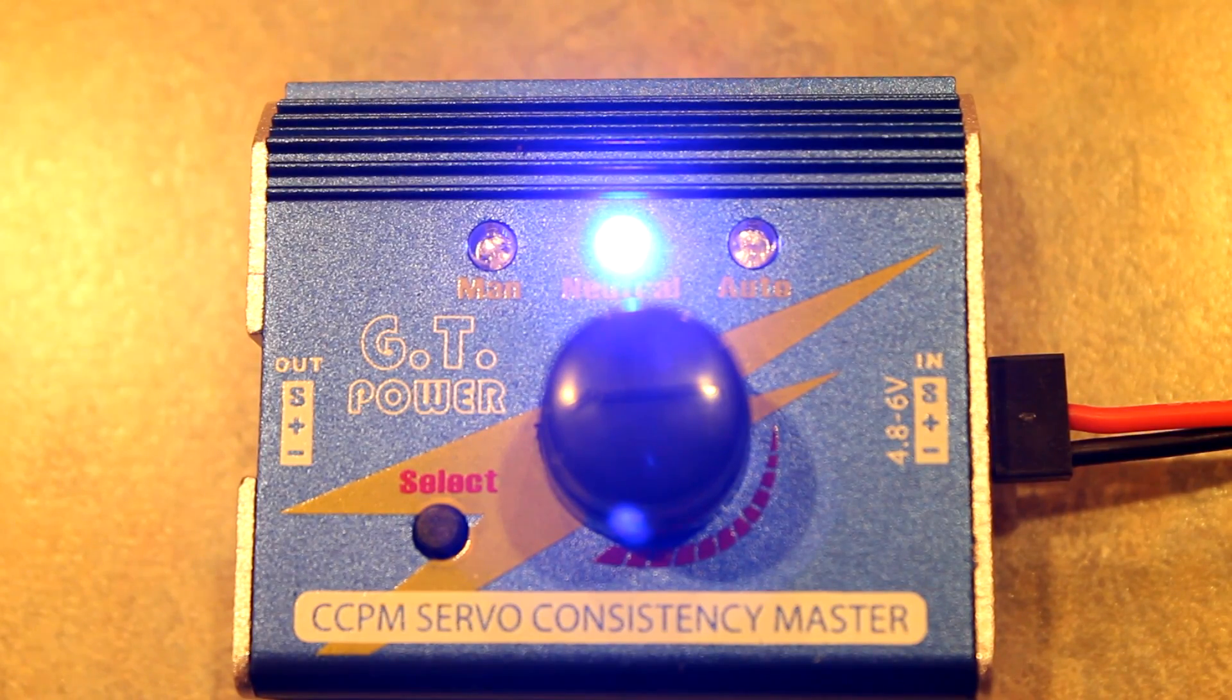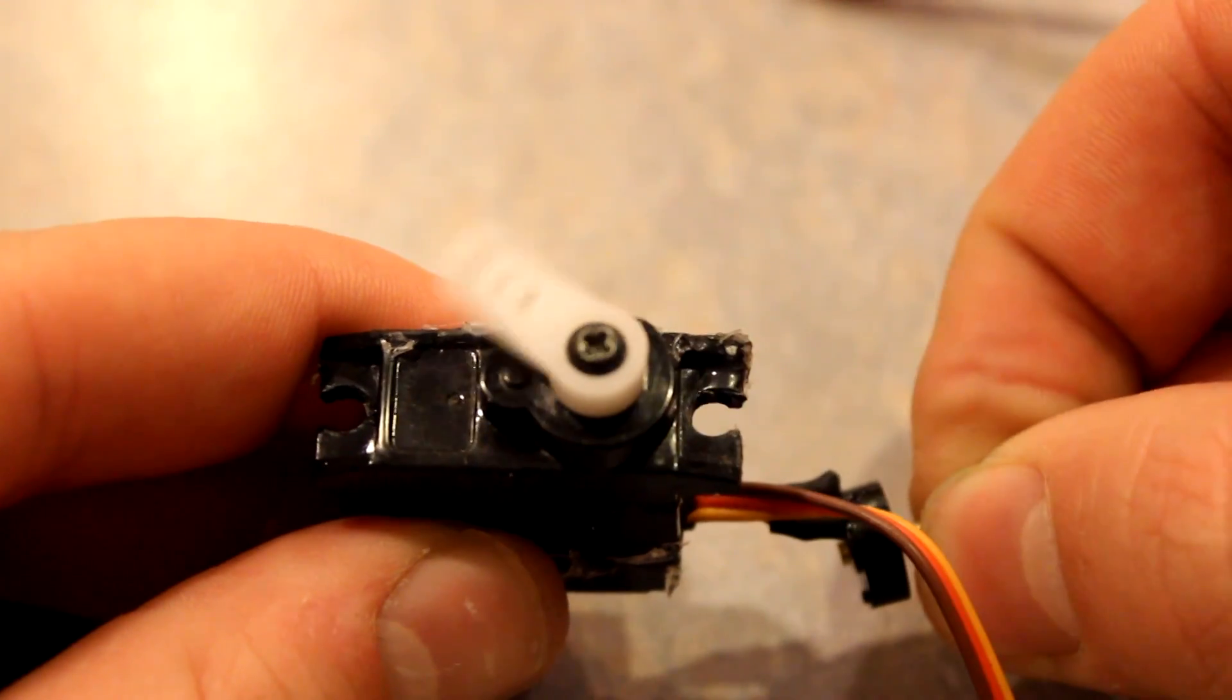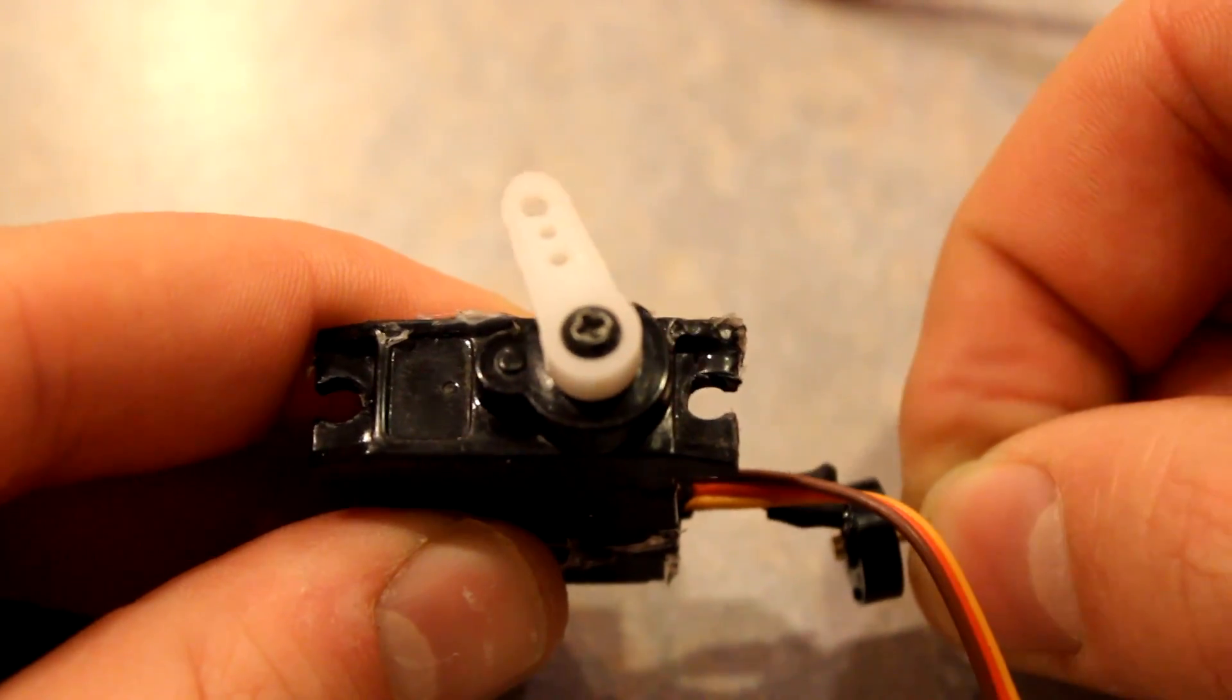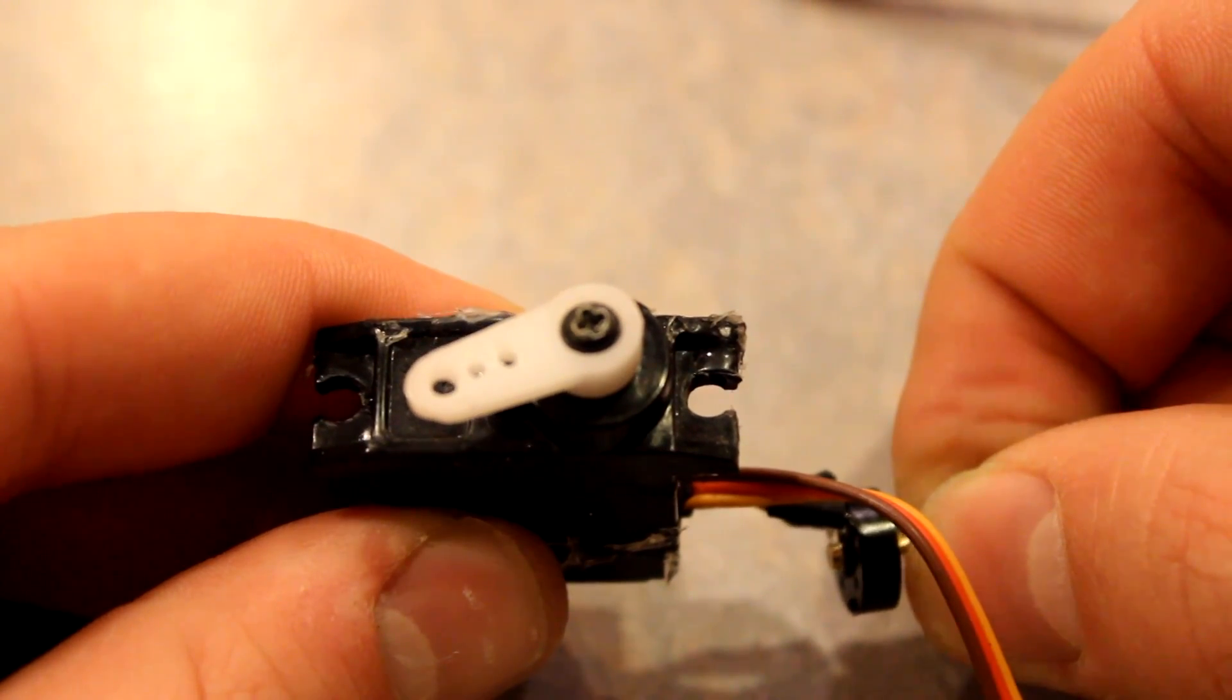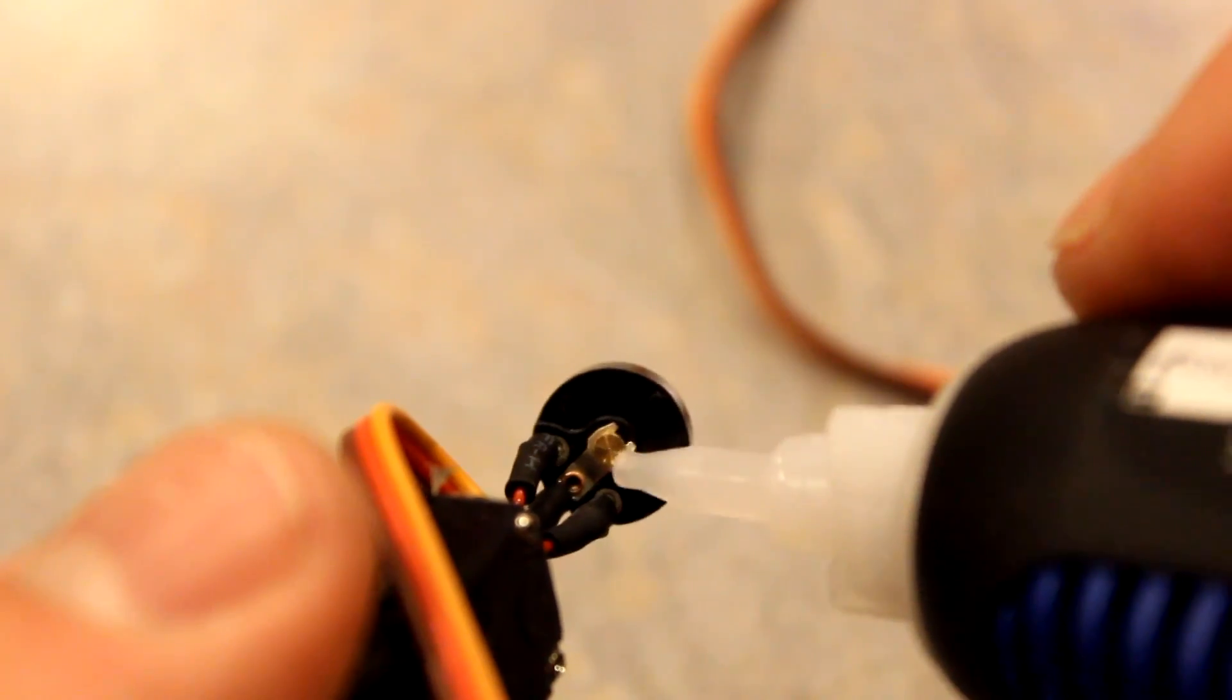Connect the servo to a tester or a receiver, set it to a neutral position, and turn the external potentiometer until the servo does not move. Glue it so the shaft of the potentiometer cannot move, and there you have it!